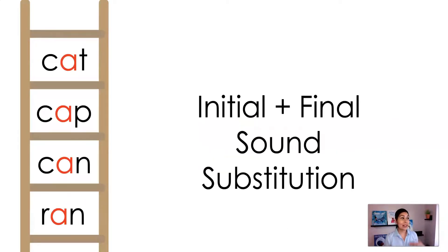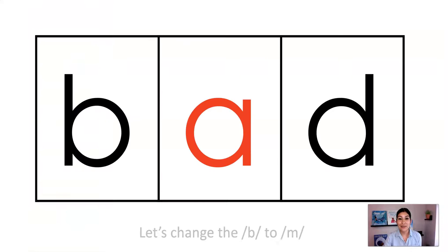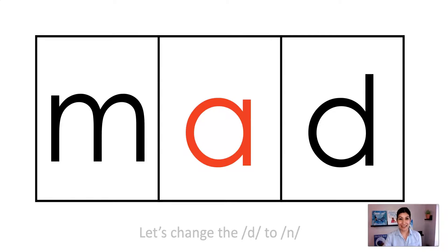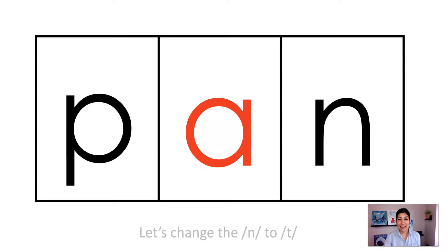And finally, when my students showed me that they were okay changing initial and final sounds, then I would give them a more complex word ladder where both the initial and final sounds are being changed within the word ladder. So here's the word bad. Let's change the B to M — what word did we make? Mad. Let's change the D to M — what word did we make?